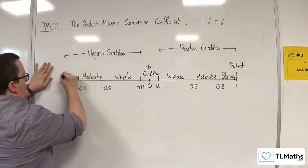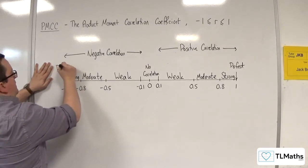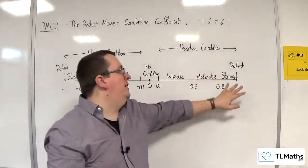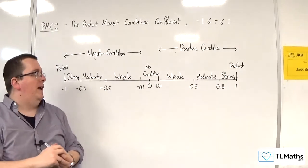And if it's exactly at minus 1, then it would be perfect negative correlation. So this is essentially your sliding scale and how you could interpret a correlation value, a correlation coefficient.